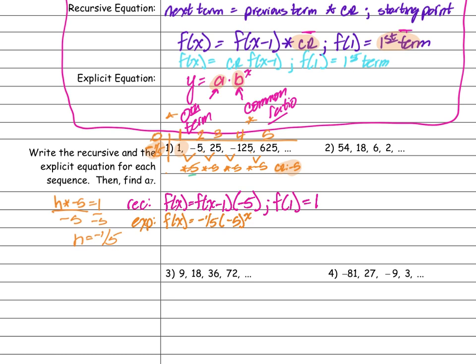They want me to find f(7), which is going to be (−1/5) times (−5) to the 7th power.